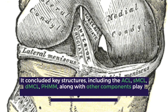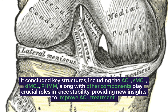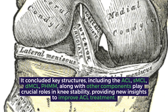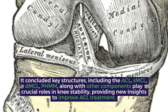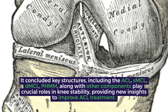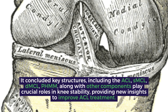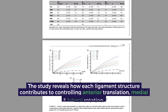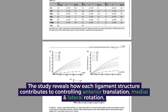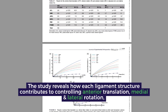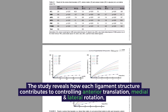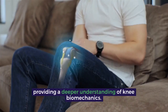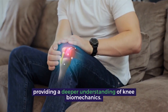It concluded that key structures including the ACL, SMCL, DMCL, and PHMM, along with other components, play crucial roles in knee stability, providing new insights to improve ACL treatment. The study reveals how each ligament structure contributes to controlling anterior translation and medial and lateral rotation, providing a deeper understanding of knee biomechanics.